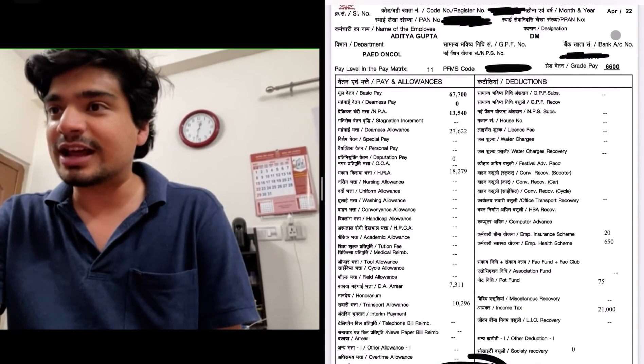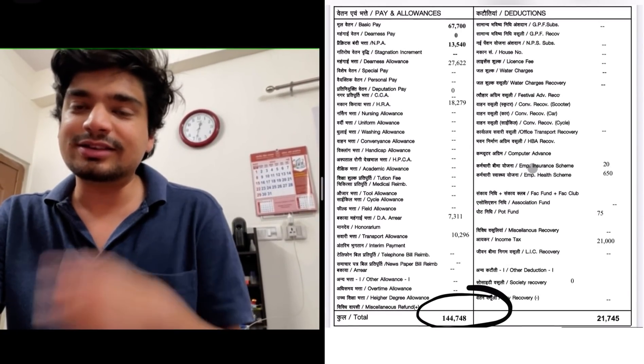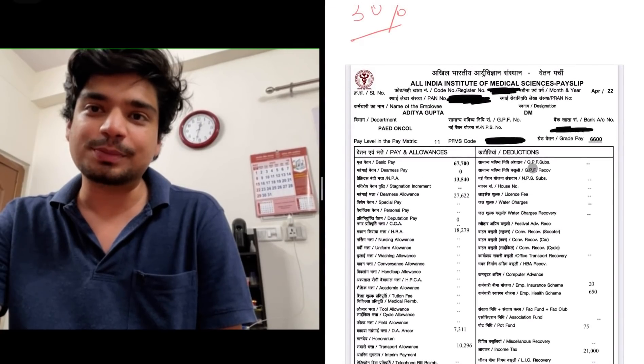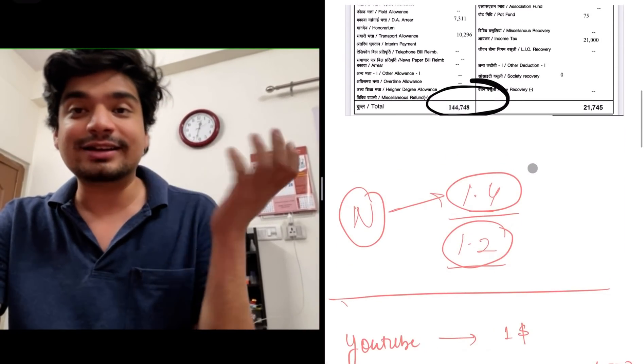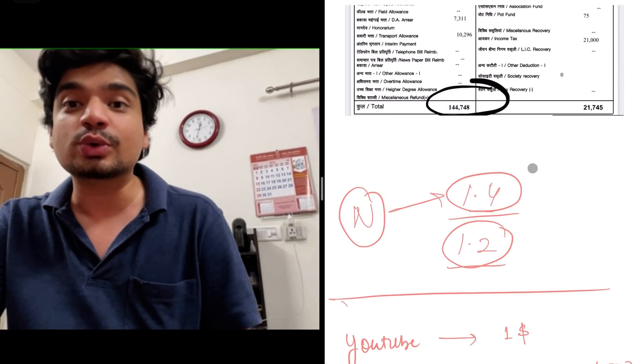That is April salary. This is the salary of April 2022. This is my salary, 1.45 lakh rupees and I pay 20,000 income tax on that. So my actual salary after tax is around 1.25 lakh rupees.